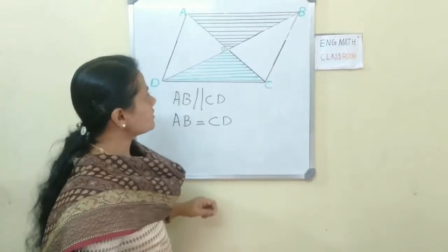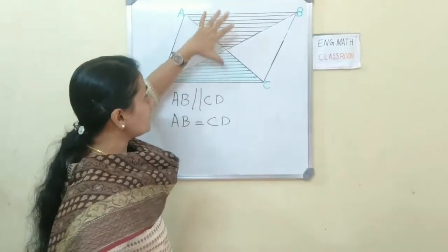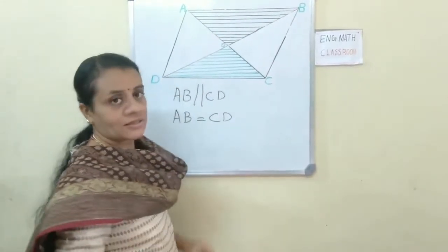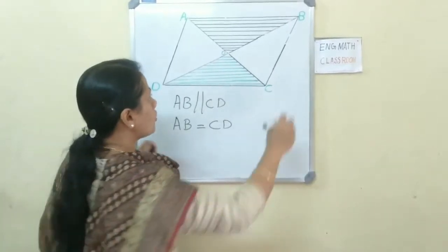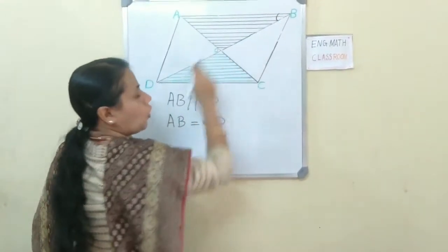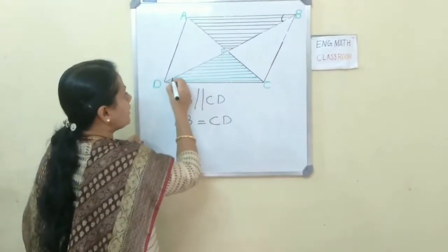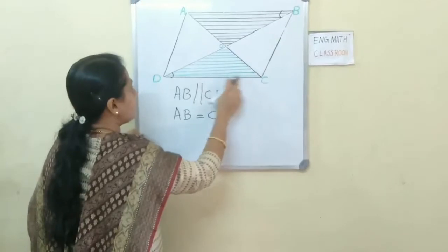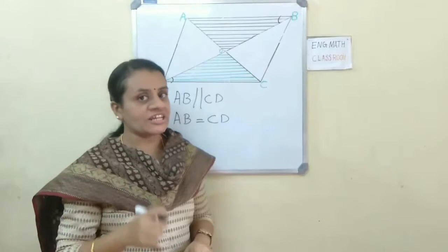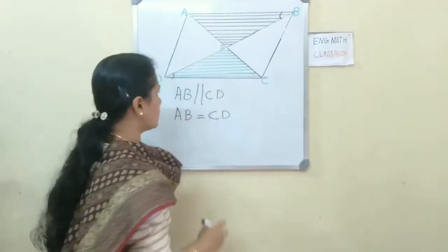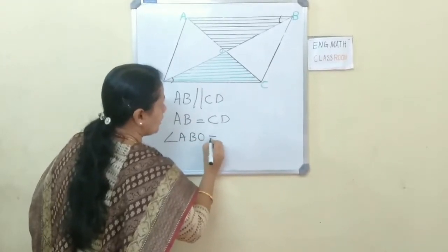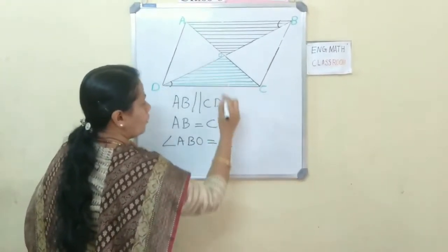Next, if these two are parallel lines and BD is a transversal line, then angle ABO and angle CDO are equal because alternate angles are equal. Write down: angle ABO equals angle CDO.